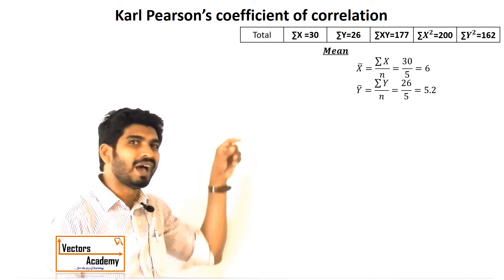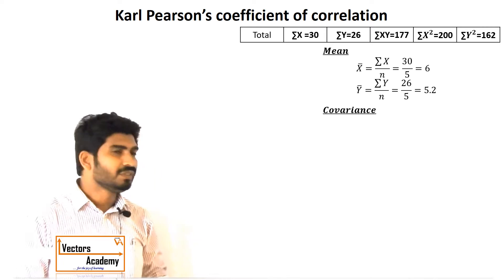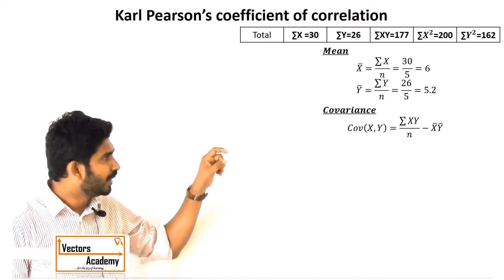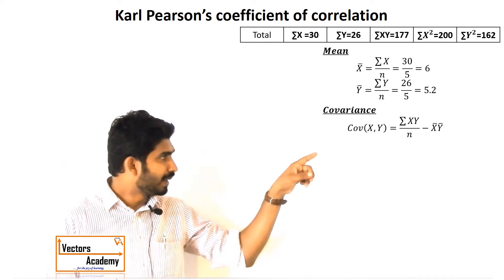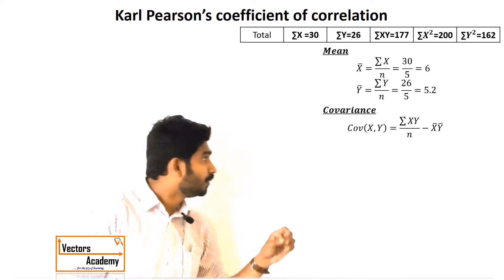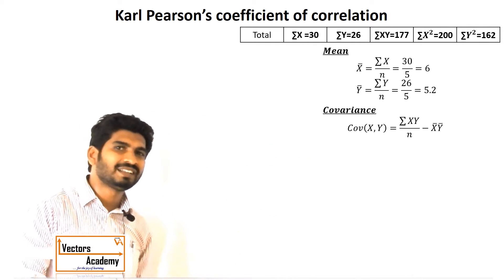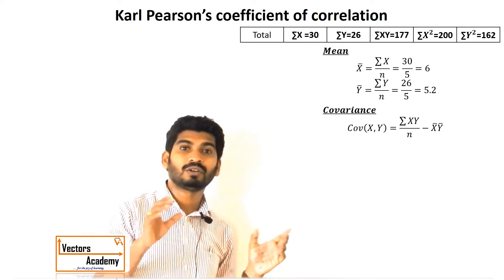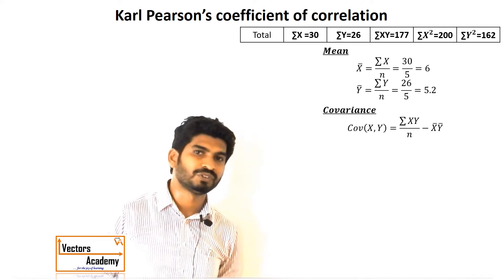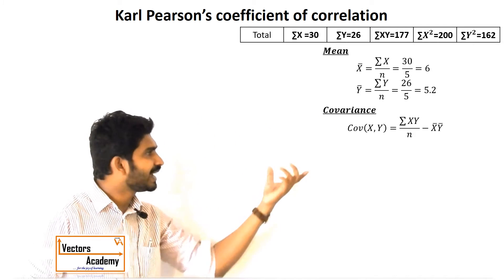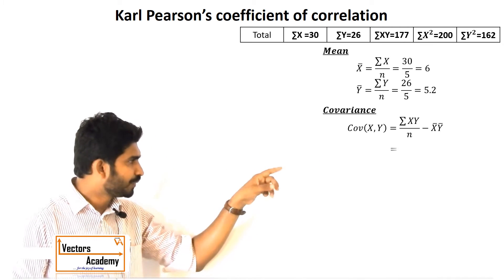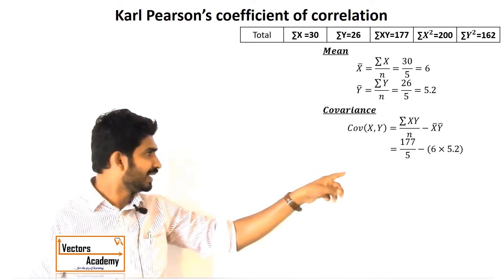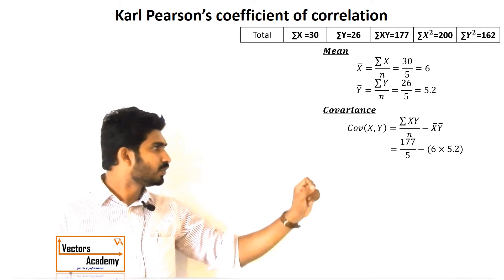Now comes a new concept: covariance. The formula for covariance is: covariance equals summation of x·y divided by n, minus x-bar times y-bar. We are not going in-depth into covariance since we are primarily concerned with the correlation coefficient. We simply substitute all the already-calculated values into the formula and compute the covariance.